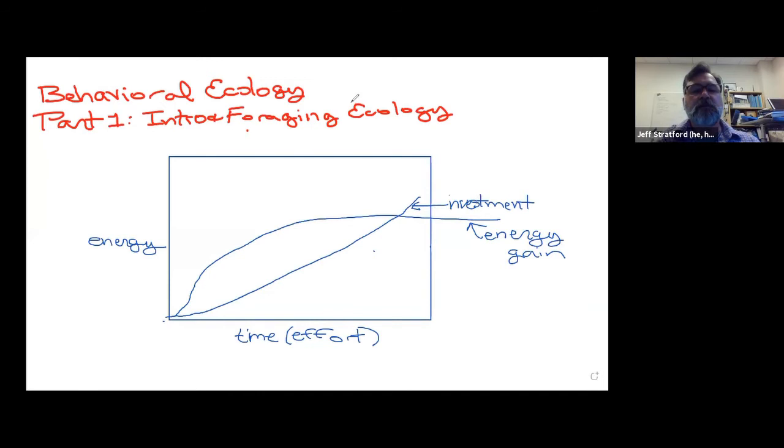So investment is energy out. Energy gain is a positive. If we look at the difference between these two. So this line is your net energy. So that line represents the difference between your costs and your benefits. And it's maximized at some point here.